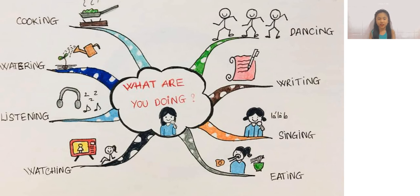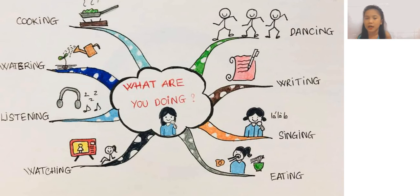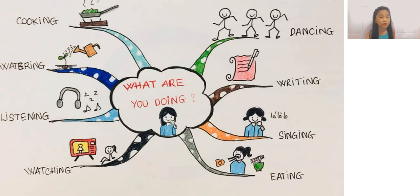Next is watching. Watching is the action where you are using your eyes to look at something. You can watch movies, dramas, or lessons. Right now, you are watching me. You can watch things on a phone, a laptop, a tablet, or a TV. There are many ways for you to watch.